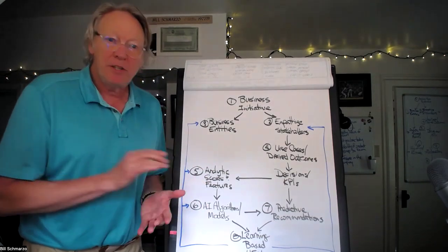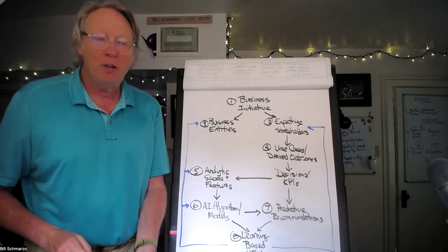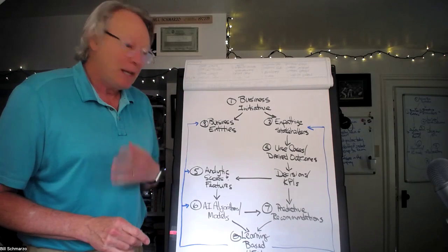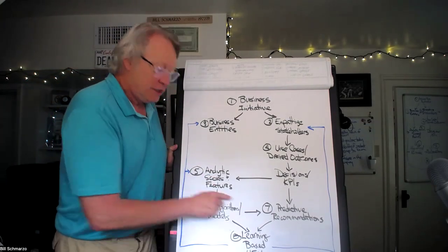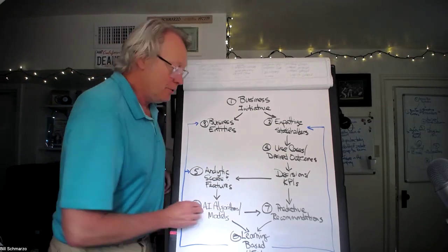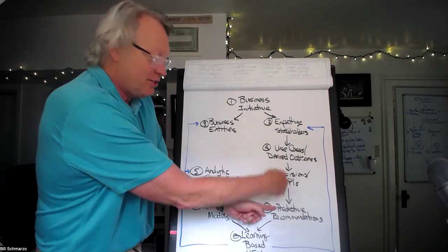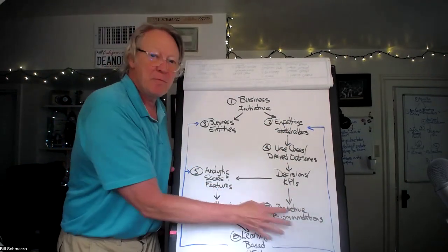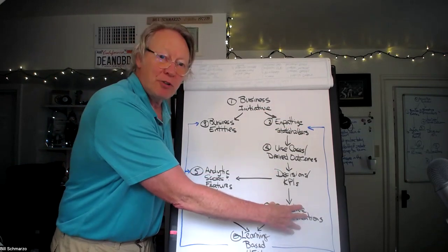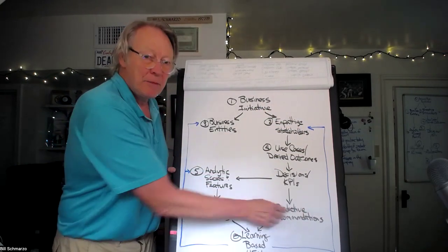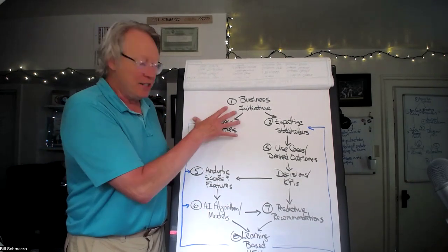Here's where we start using the different types of AI capabilities. We have the generative, we have the causal, we have the analytical, and we have the autonomous. We're going to start using these scores to build models that we're going to then use to drive the predictive recommendations that optimize the decisions. This is the linkage and mapping point. This is where you bring together the decisions the stakeholders are trying to make, and you map them back to the recommendations being driven by the models and the scores around your business entities.